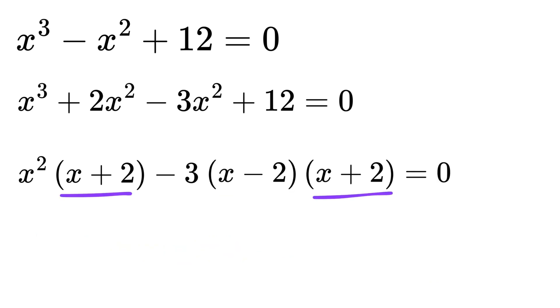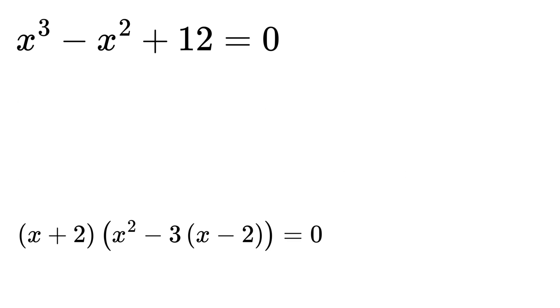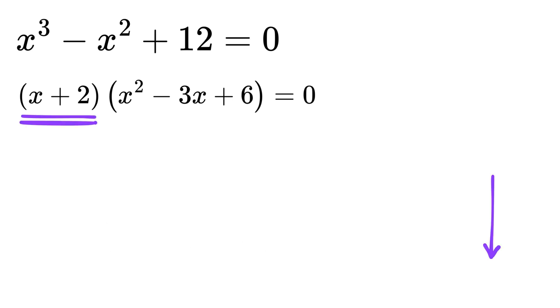So, take x plus 2 as common from both of them to get x plus 2 times the expression x squared minus 3 times x minus 2 equals 0. Or, x plus 2 times x squared minus 3x plus 6 equals 0. Then, this will give one of the root as x equals minus 2.